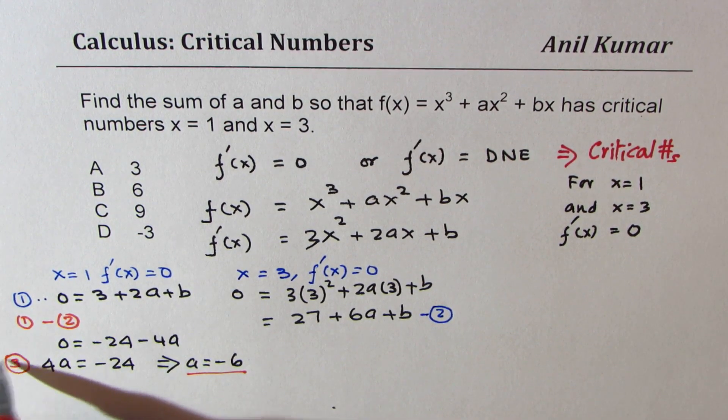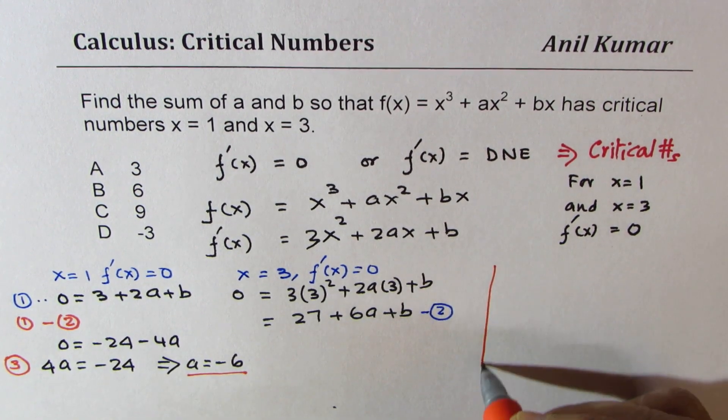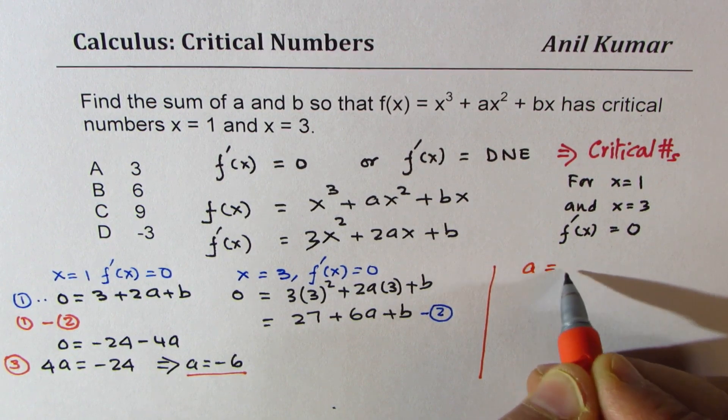Equation number 3. So if I substitute this in equation 1, let's do it here. So we know a = -6.